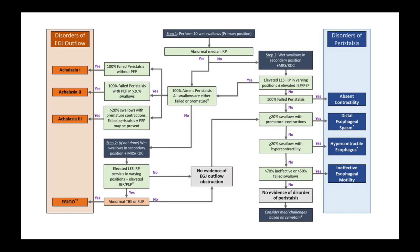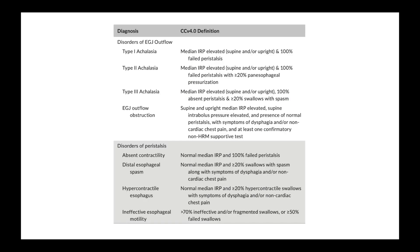This is the scheme of the Chicago classification version 4, with the subclassification in disorders of the AGEJ outflow and disorders of the peristalsis. And these are the different diagnoses with the specific metrics required.